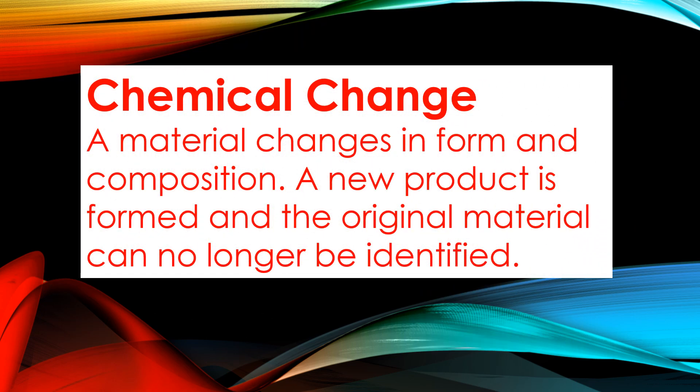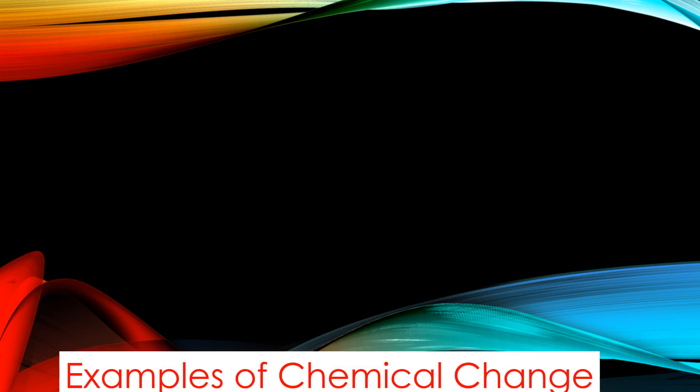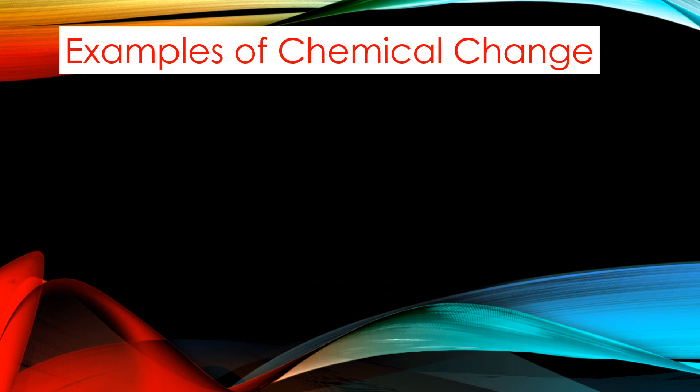In chemical change, a material changes in form and composition, a new product is formed, and the original material can no longer be identified. Examples of chemical change include burning of wood and fireworks.